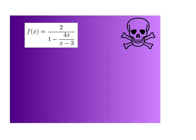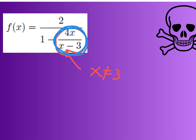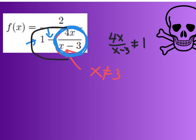If there's a composite denominator — like 1 minus 4x over x minus 3 — x cannot equal 3. But also, the whole expression 4x over (x minus 3) cannot equal 1, otherwise the full denominator turns into zero. For a radical domain like square root of 4 minus 3x, set 4 minus 3x greater than or equal to zero, subtract 4 from both sides, divide by negative 3 and flip the inequality: x is less than or equal to 4/3.